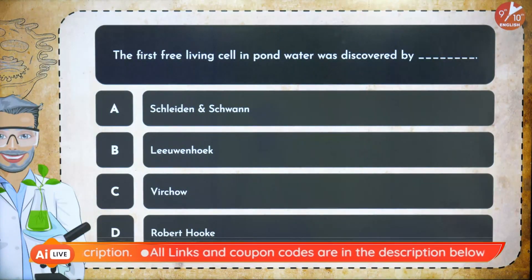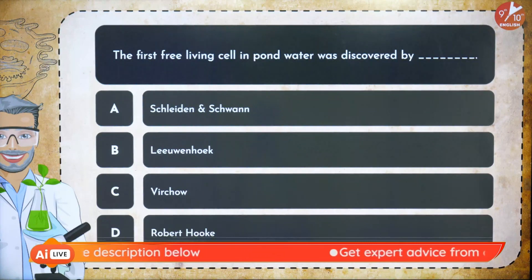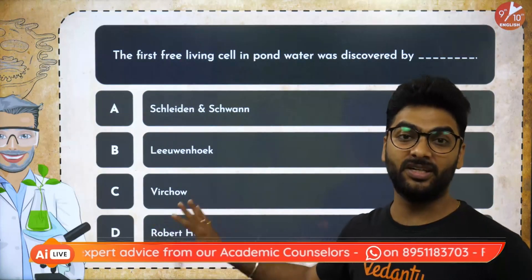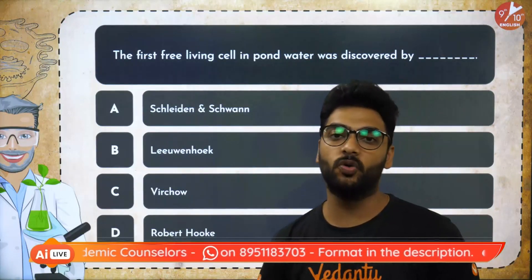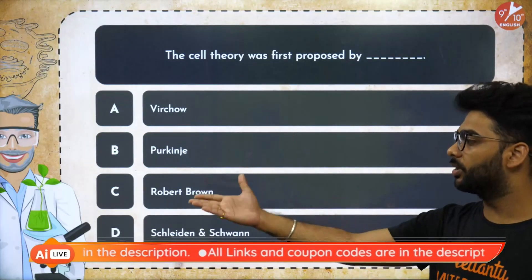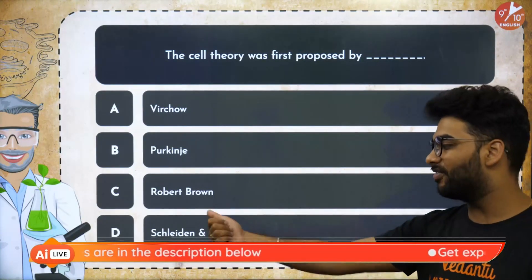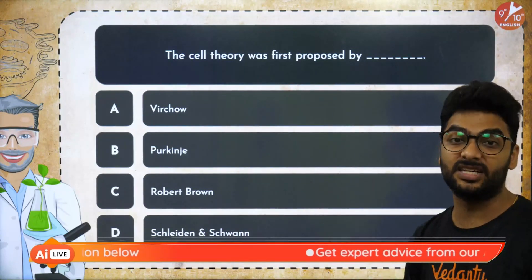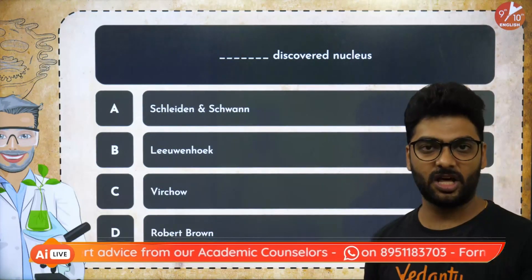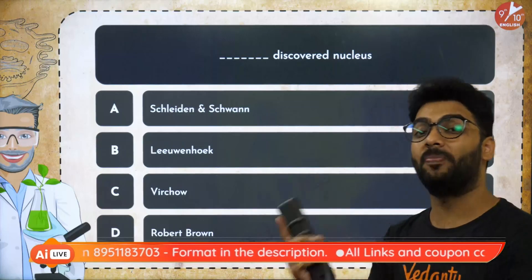Let's do a couple of questions from the previous session. The first living cells in a pond were observed by Leeuwenhoek. Schleiden, Schwann and Virchow together proposed the cell theory — Schleiden and Schwann in 1838–39, and Virchow in 1865. Robert Hooke discovered dead cells in the cork. And the nucleus was discovered by Robert Brown — your question for the comments: from which plant cell did Robert Brown discover the nucleus?